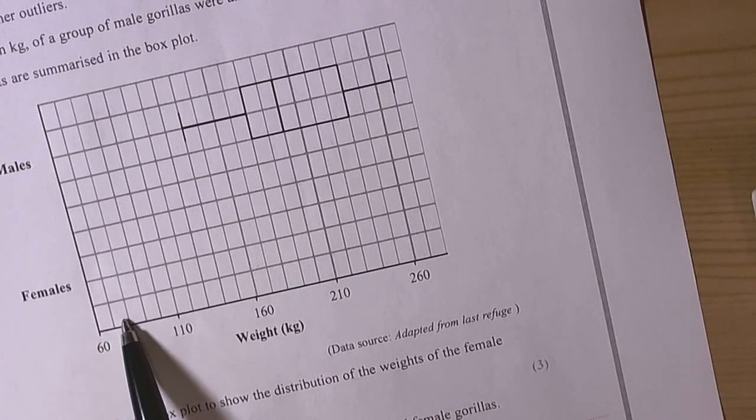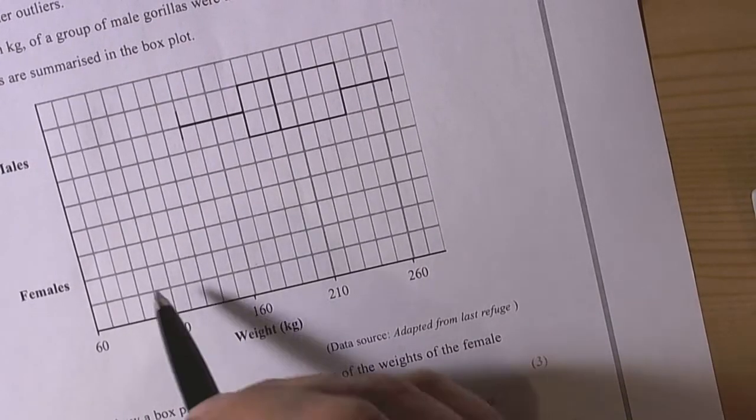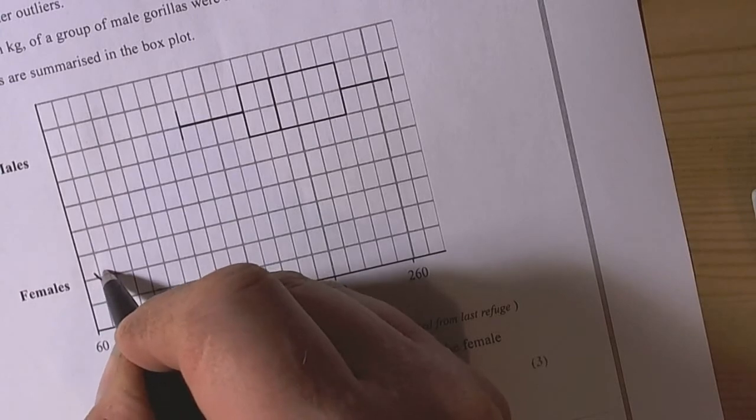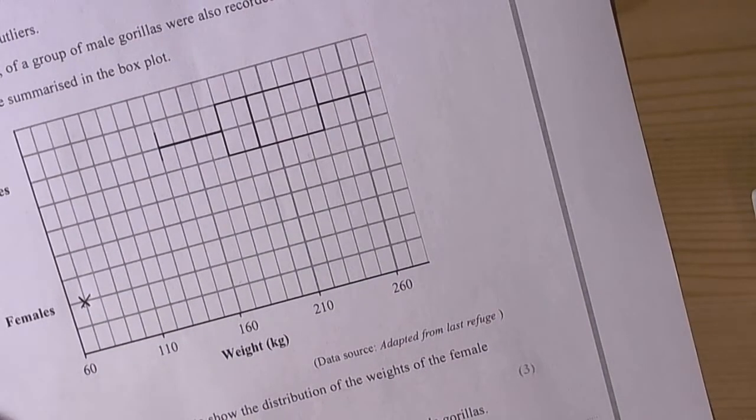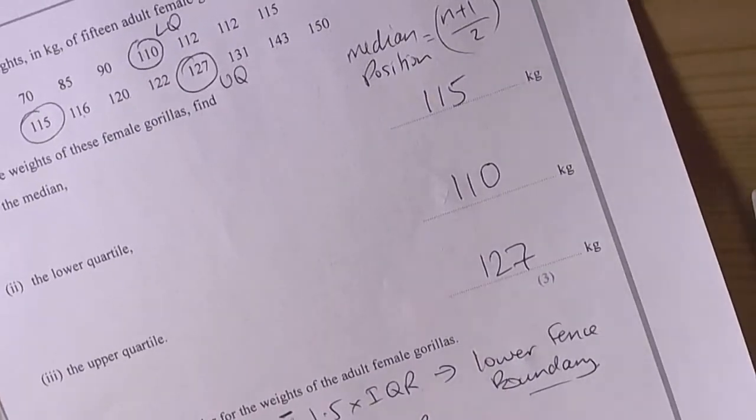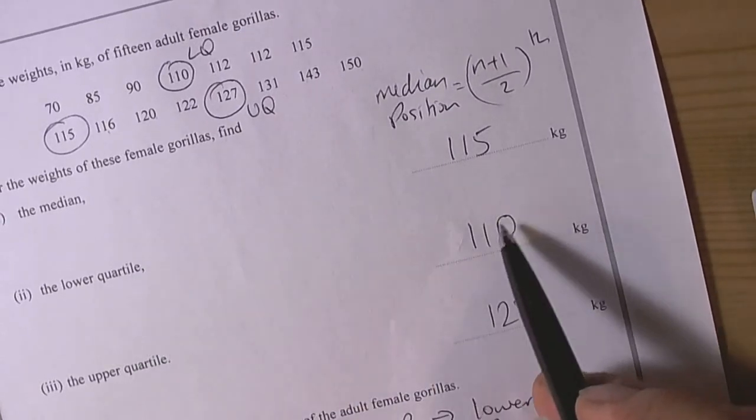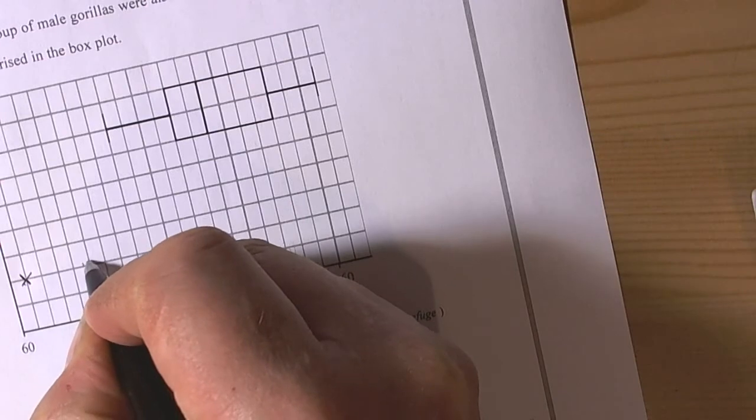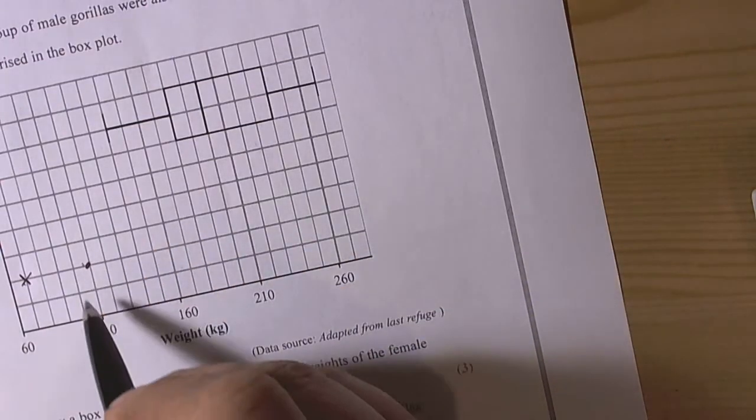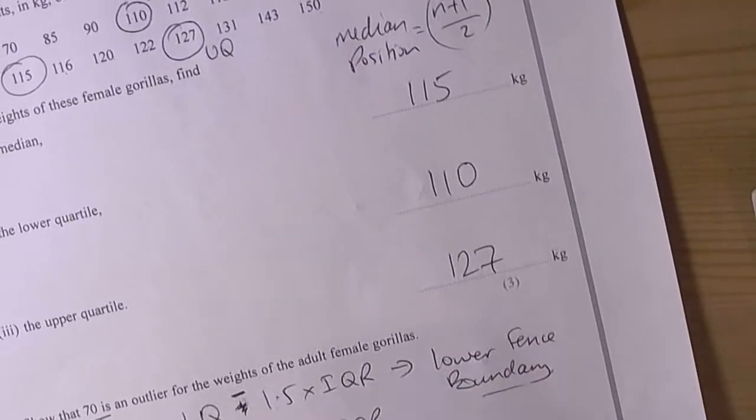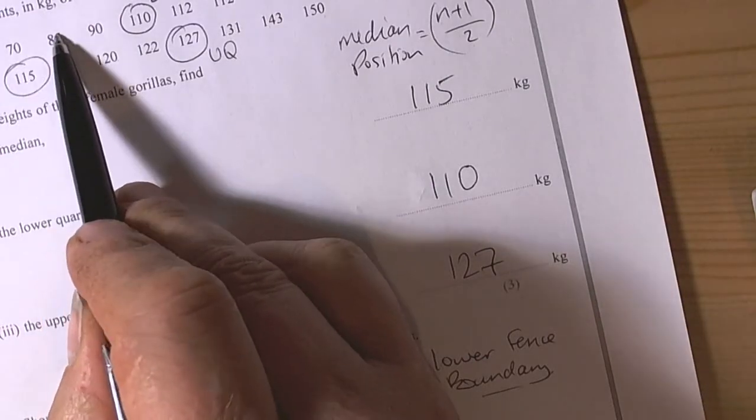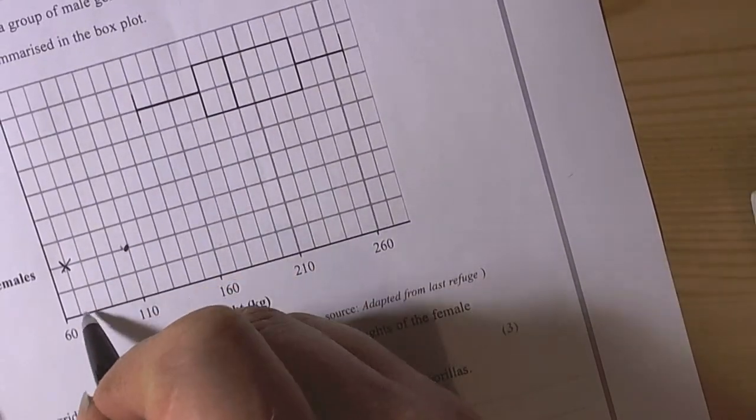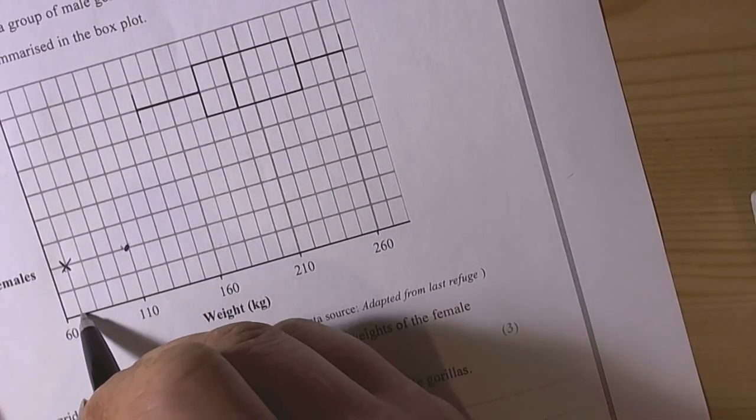60, 70, 80, 90, 100, 110, so it's going in tens, so 70 we should put a cross because that was an outlier. Then the next value to plot will be the lower quartile value which was 110. The minimum value is the lowest value in the data, that's not an outlier so that's 85, so the lowest value 70, 80, 85 will be there.